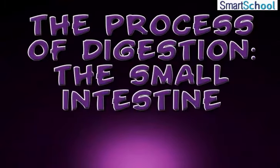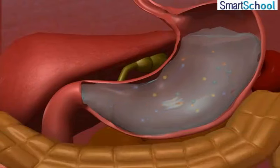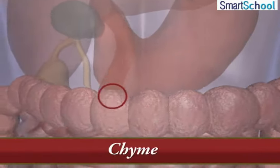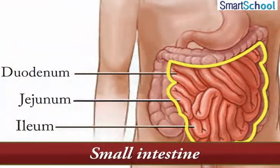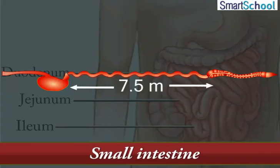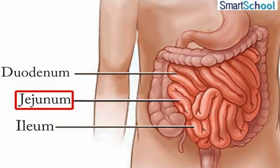In the process of digestion, we have seen how the food is digested by the secretions of the inner lining of the stomach. From the stomach, the partially digested food, also called the chyme, enters the small intestine. The small intestine is a highly coiled tunnel-like tube, which is the longest section of the digestive tract. It is approximately 7.5 meters long and is divided into three segments: duodenum, jejunum, and ileum, each with a different digestive function.